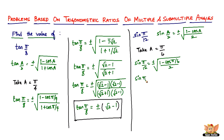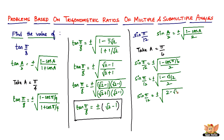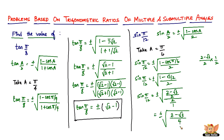Now cos(π/6) is cos 30°, which equals √3/2. Substituting, sin(π/12) equals plus or minus the square root of (1 minus √3/2) divided by 2, which simplifies to plus or minus the square root of (2 minus √3)/2 divided by 2, giving us plus or minus the square root of (2 minus √3) divided by 4.